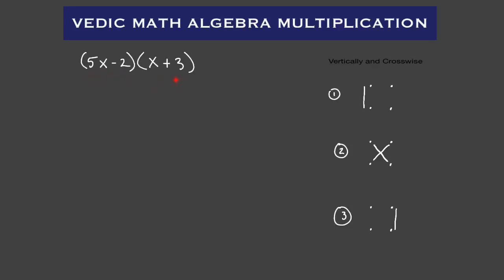Next: five X minus two times X plus three. First thing we're going to do is line them up vertically — five X minus two, multiplying that by X plus three. Step number one is our vertical: five X times X. That gives us five X squared. So our first term is five X squared.